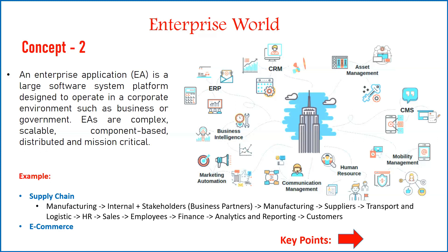You may be running a business in a city, a country, or across the world, meaning you have multiple internal and external partners. They are all connected with each other in real time, 24/7, exchanging data and messages. In a manufacturing sector you have a manufacturing department, different supplier partners, transport and logistics, HR, sales, finance, analytics and reporting, and customers — everyone connected in real time.